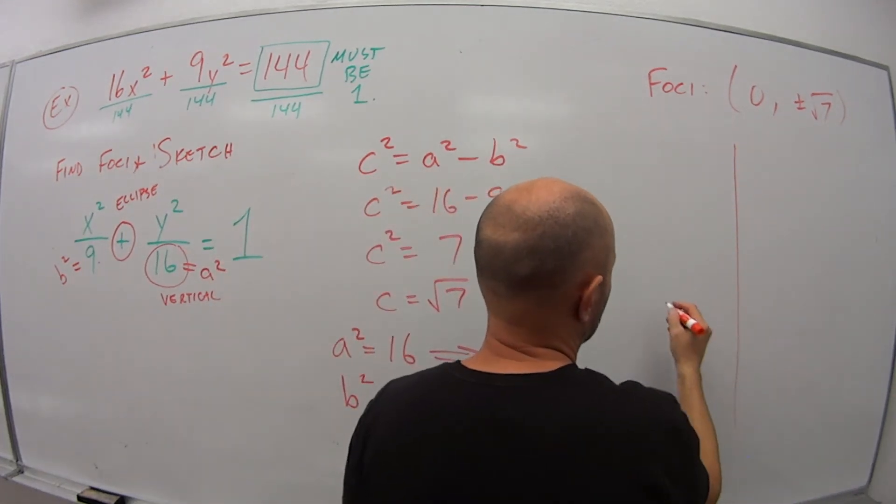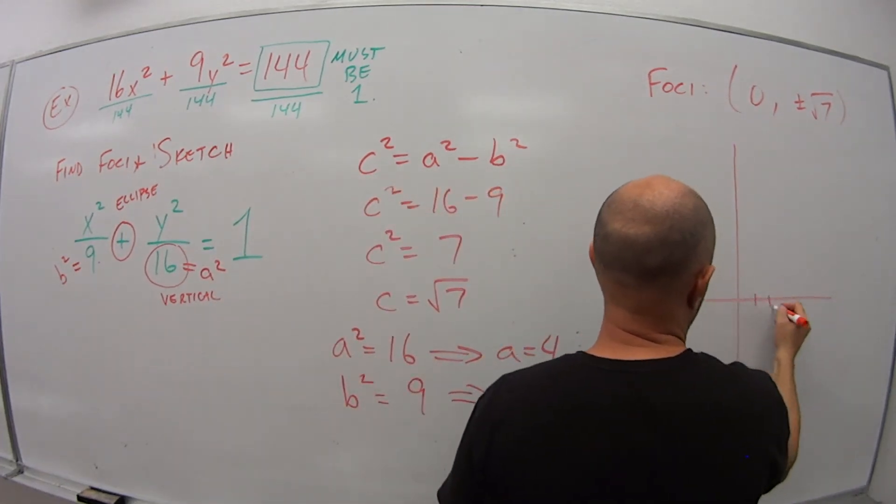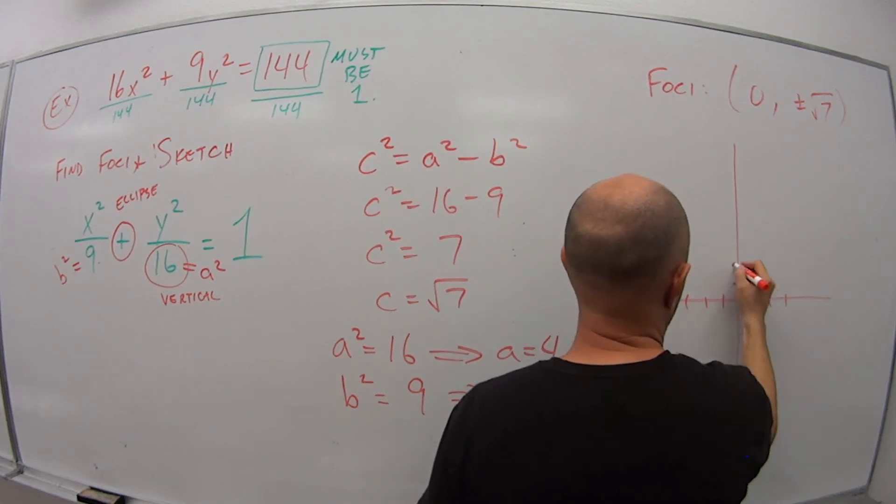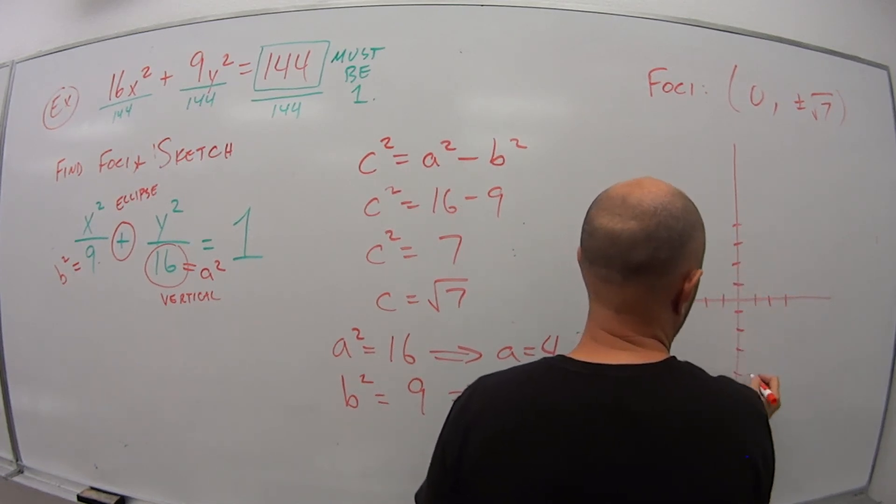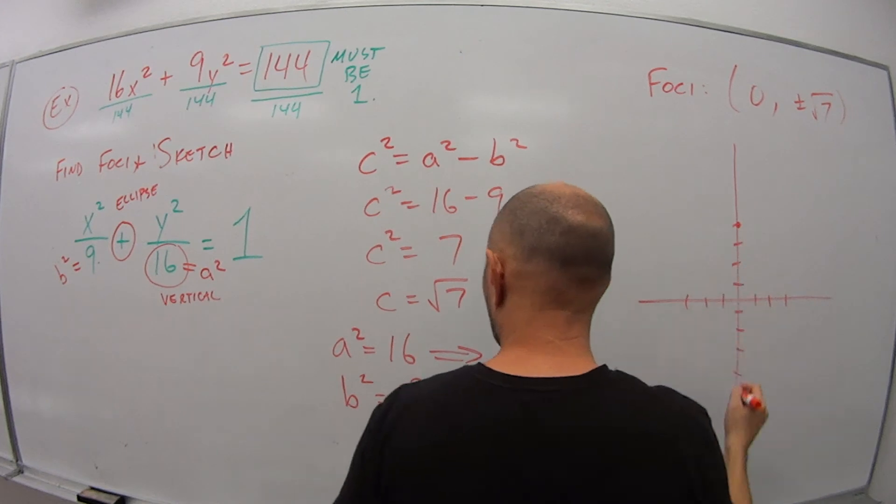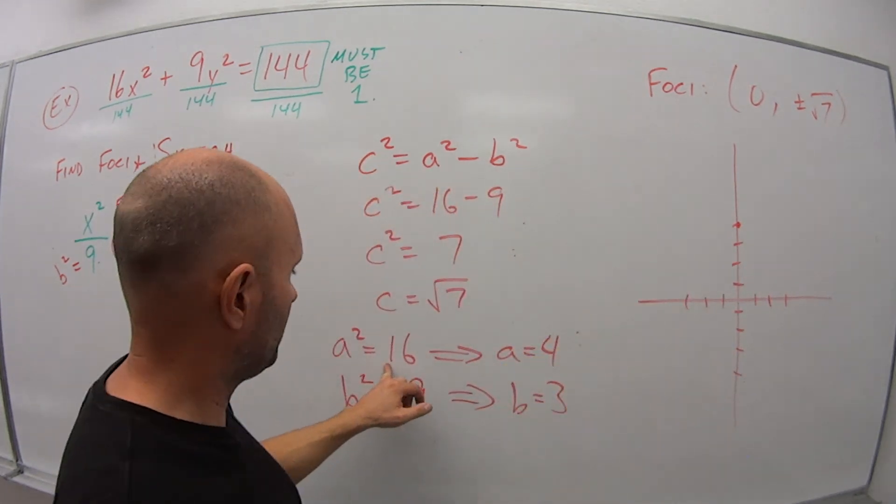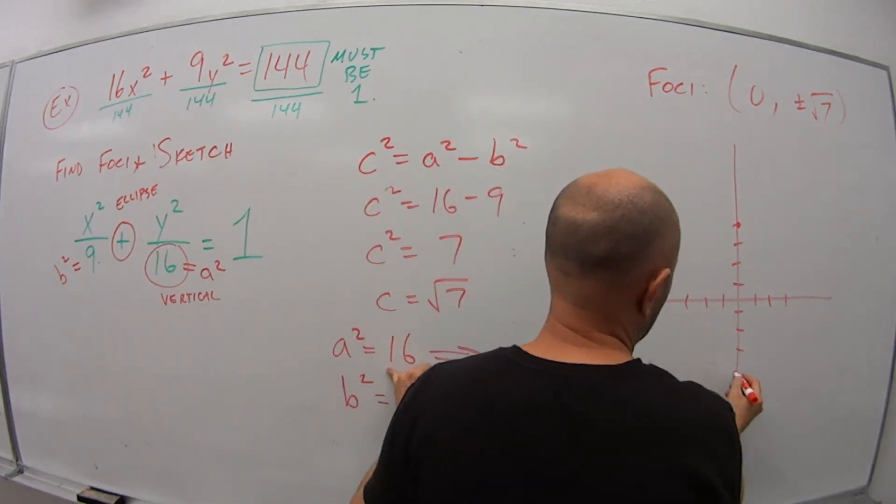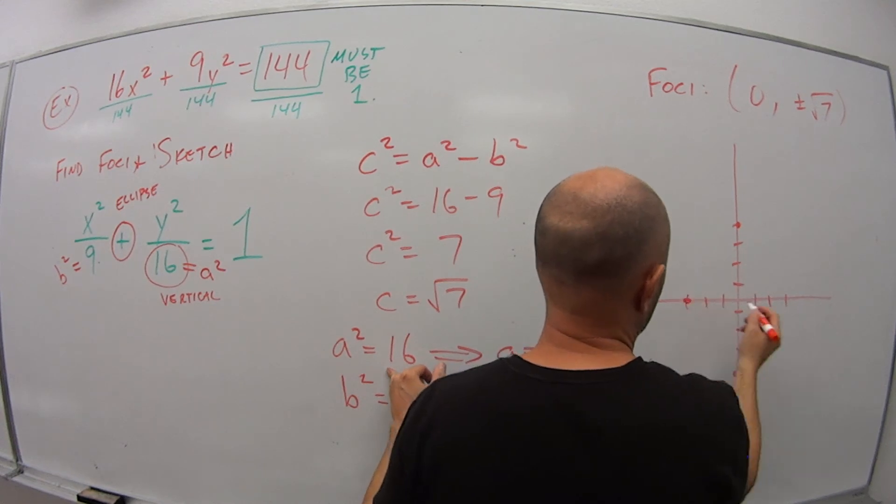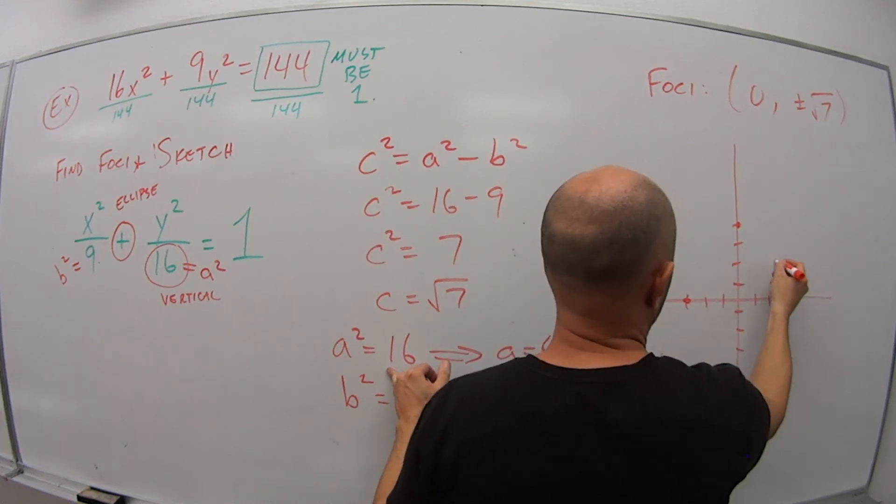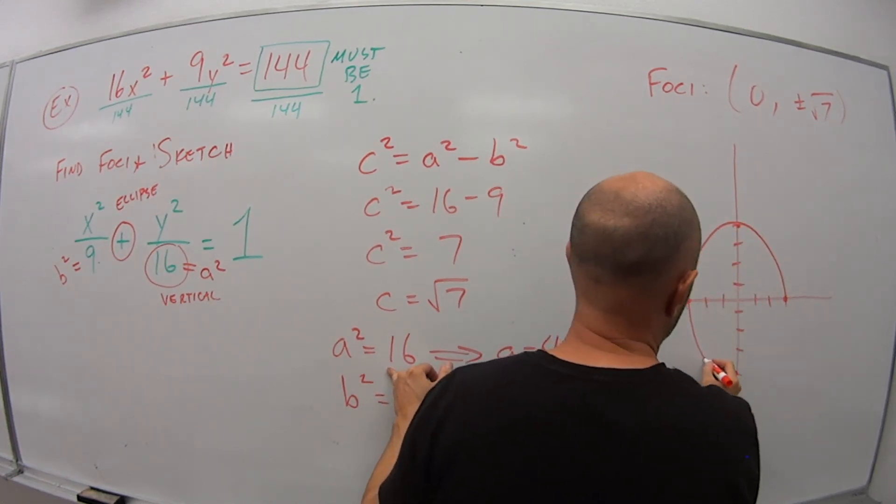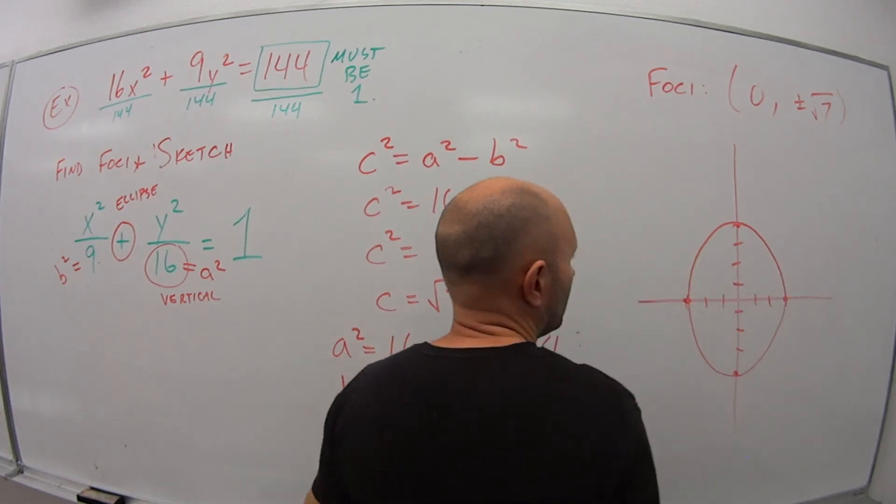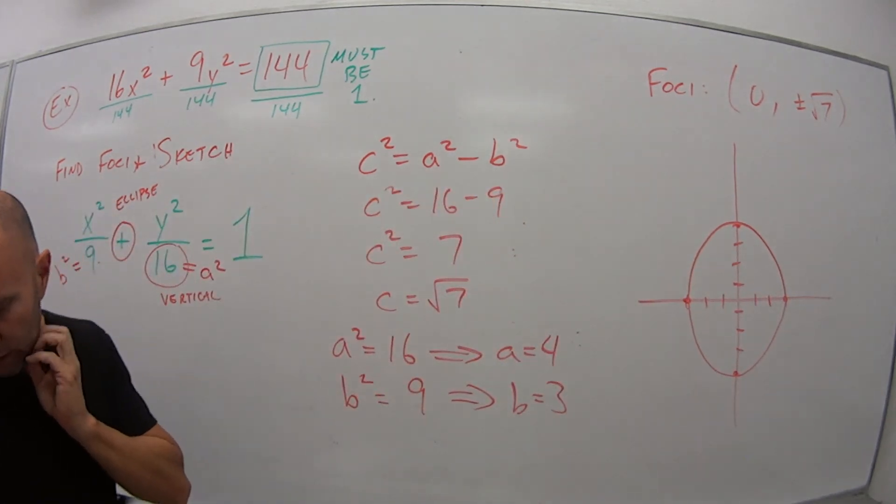So if I want to sketch this, we have 4 units. Again, we're vertical. So 4 units up or down, 3 units left or right. So we get a vertical looking ellipse here.